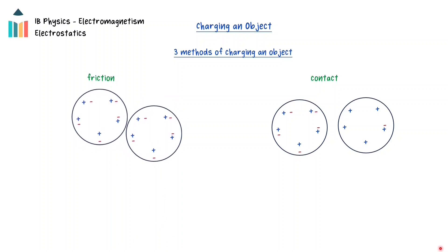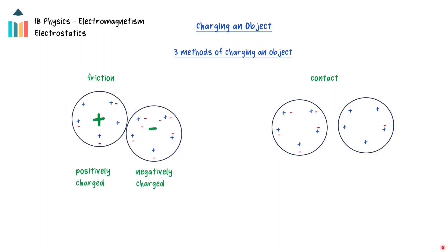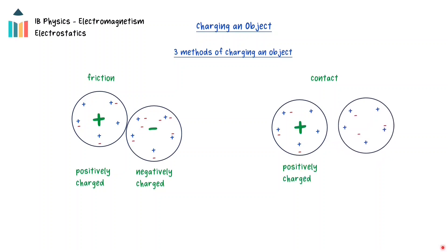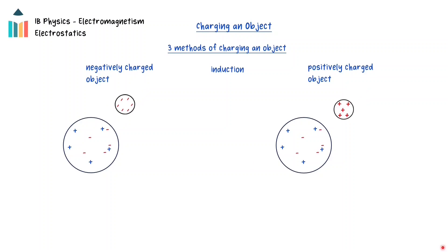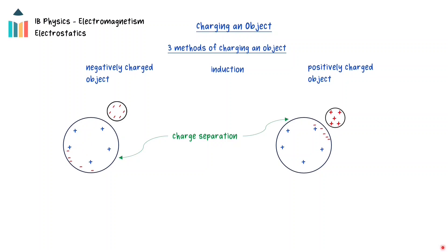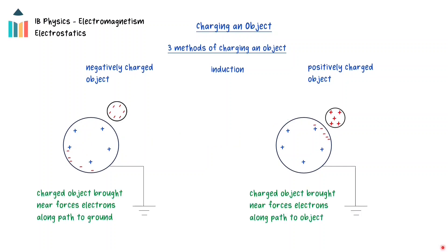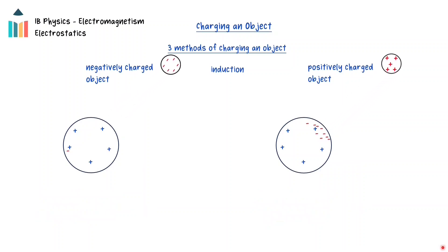Through friction, rubbing two insulators made of different materials against each other will transfer electrons from one object to the other, creating a positive and a negatively charged object. Through contact, if a charged conducting object is put in contact with a neutral object, electrons will transfer from one object to the other. When the contact is broken, the uncharged object will now be electrically charged with the same sign as the charged object. Through induction, if a charged object is brought close to an uncharged object, the charged object will exert an electrostatic force on the electrons in the neutral object, causing them to move and create a charge separation. If there is a path from the neutral object to the ground, electrons can move on or off the neutral object, causing it to be electrostatically charged. The object remains charged once the connection to the ground is broken, and the charged object can then be removed. Objects charged by induction will have the opposite electrostatic charge from the object that caused the charge transfer.